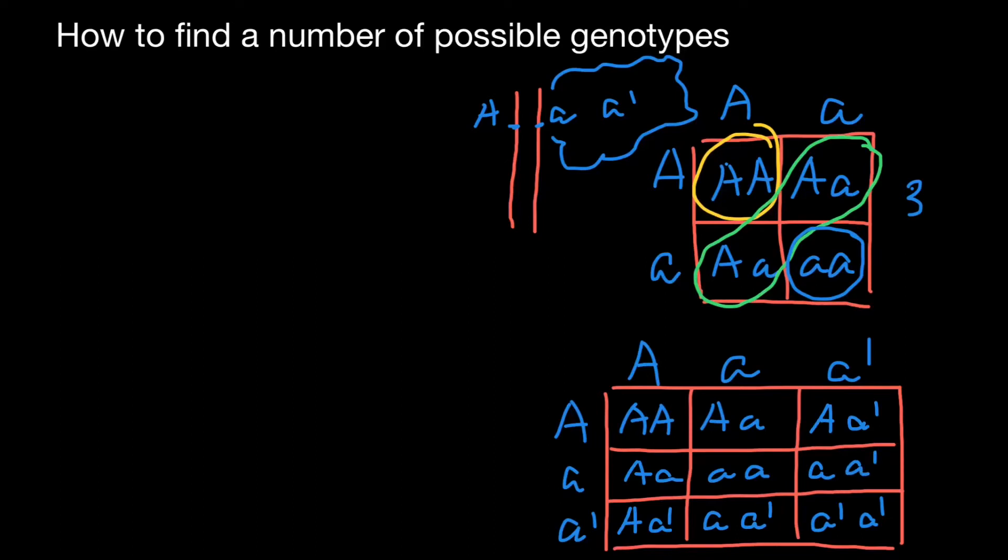How many unique genotypes we have here? And this is going to be one. And this is going to be second. And this is going to be third. And here is going to be fourth, fifth, and sixth.